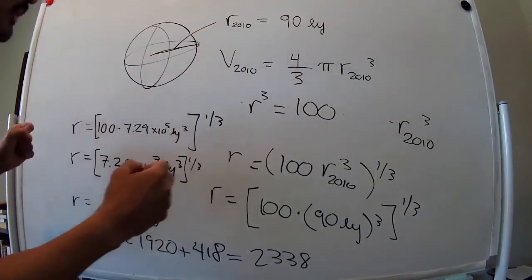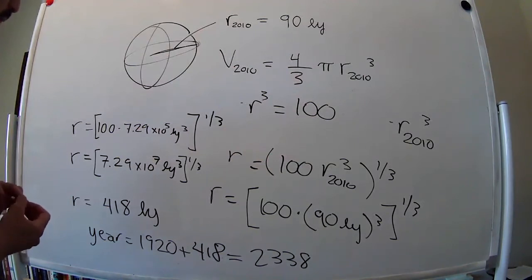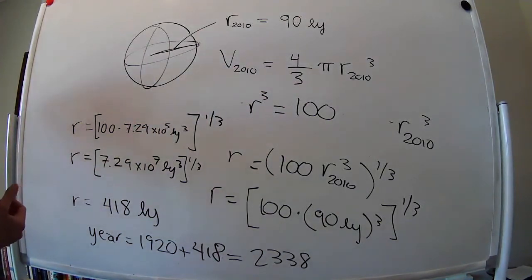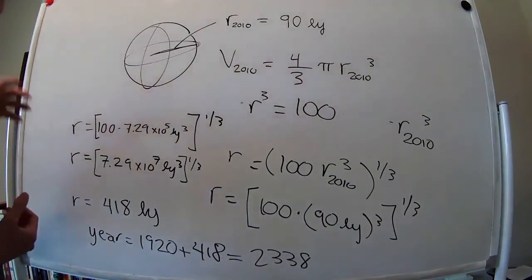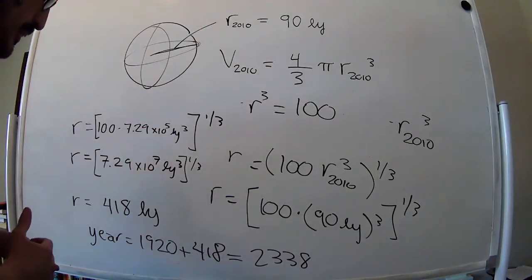Because as the waves expand in a sphere, the intensity of the wave decreases. So it might be very difficult to detect. For example, right now we have the Voyagers, right, that they just left the solar system, went into interstellar space.